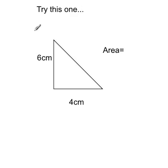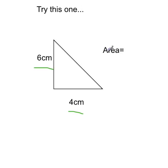Try and work this one out by yourself. Remember the formula: area equals base times height divided by 2. Times the base and the height together, then divide it by 2. We've got 6cm and 4cm. Pause the video now and have a go.